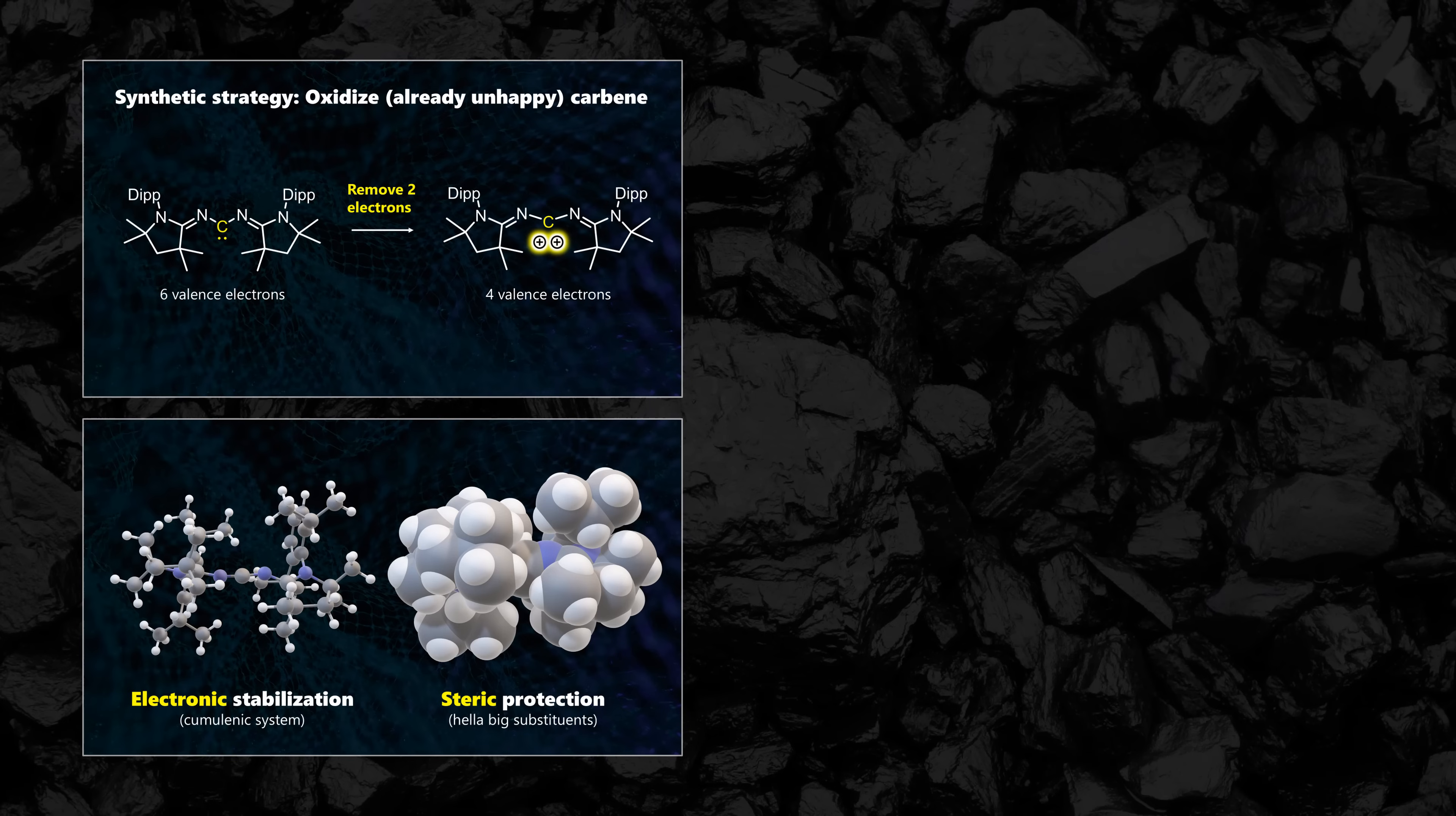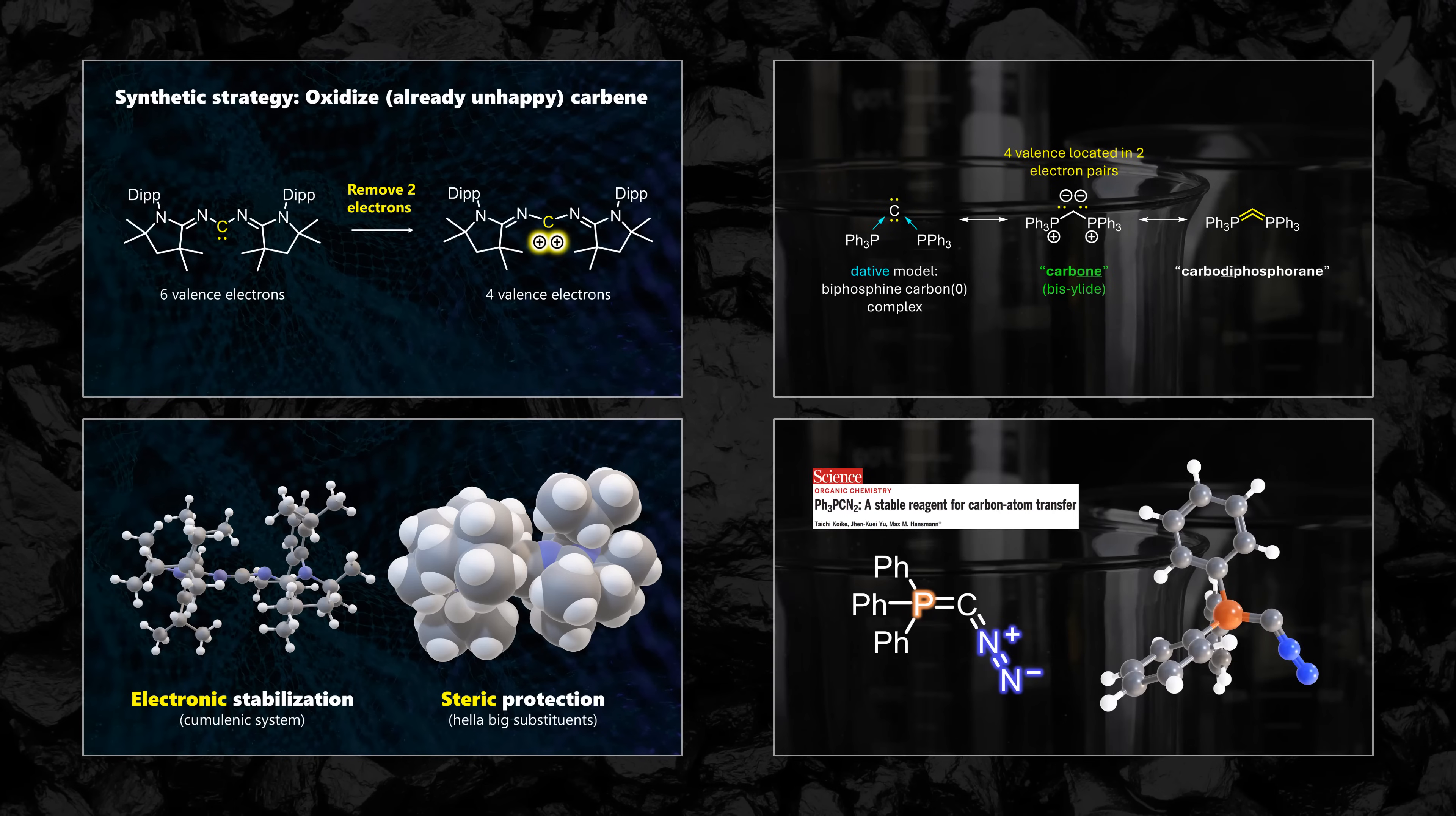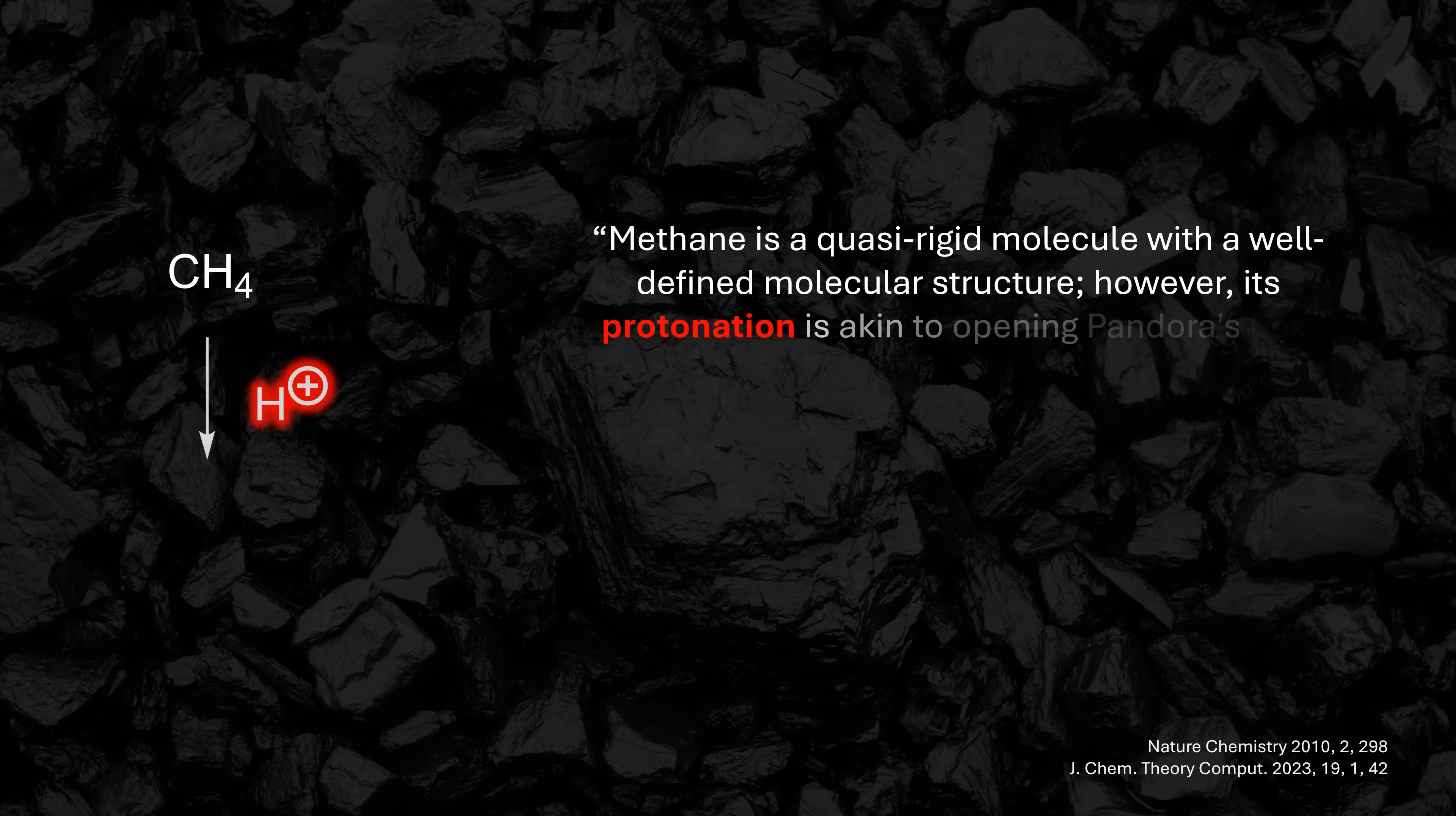It's made by oxidizing an already electron-deficient carbene, leaving it with only four instead of the desired eight valence electrons. To pick another example, we've also talked about carbenes when looking at a dual diazo-Wittig reagent. This stabilized bisylid looks very strange, but it's not out of order if you count its valence electrons.